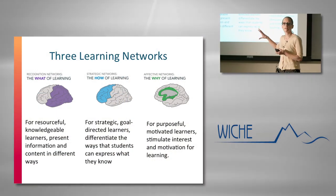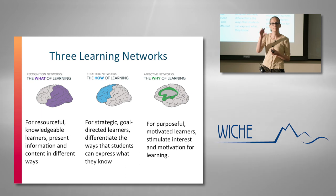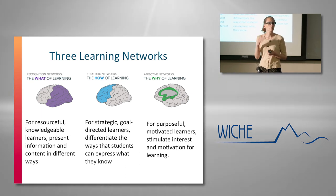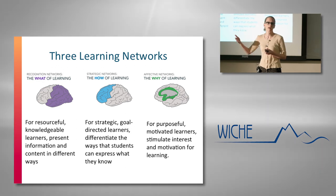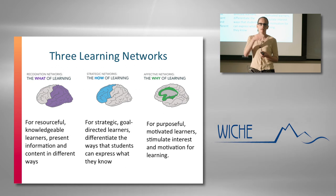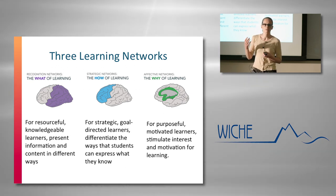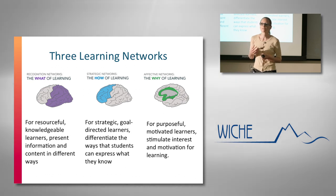People also differ in how they act on information — not just what information is coming at them and how they process it, but how they set a goal and take the steps needed to complete it. People are very different in how they get from A to Z, and that's the frontal lobe strategic network: strategic planning and processing.